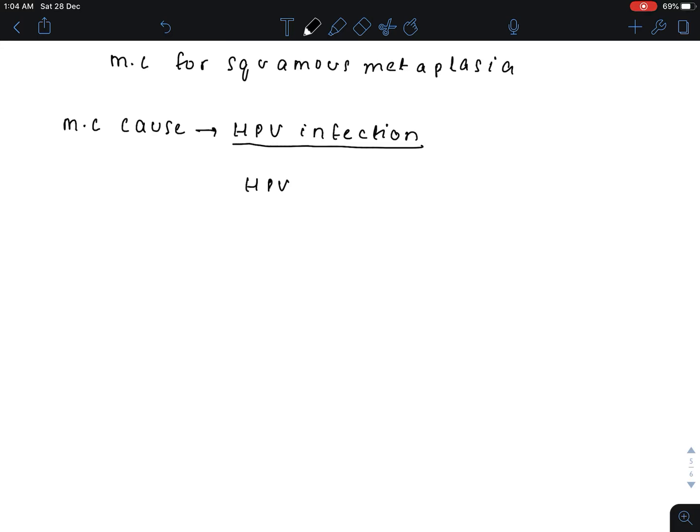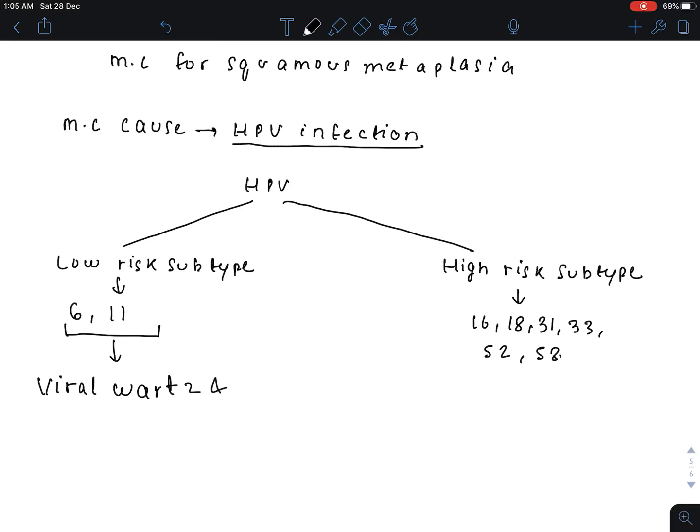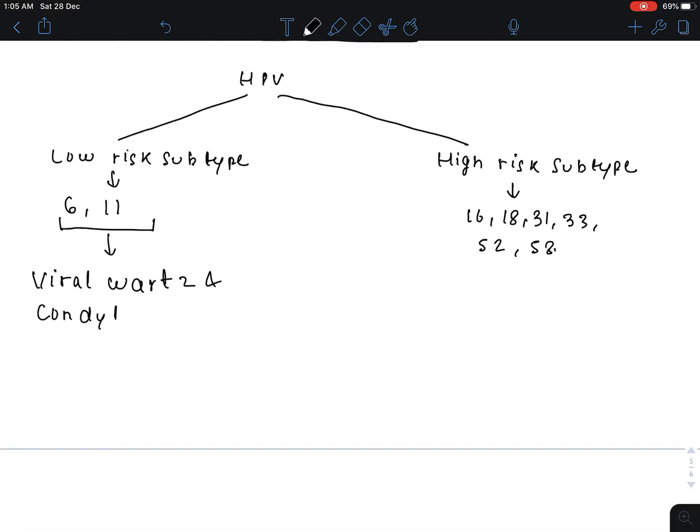Human papilloma virus is divided into two groups: low risk subtype and high risk subtype. Low risk strains are 6 and 11. High risk strains are 16, 18, 31, 33, 52, 58. The low risk subtype causes viral warts and condyloma acuminata. The high risk subtype causes cancer.